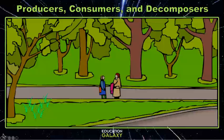Now let's find something that eats grass — a consumer. There's a cricket. He's a consumer because he has to eat the grass to get his energy. So let's draw an arrow from the grass to the cricket, following the flow of energy. Since the cricket is getting the energy, the arrow points to him.